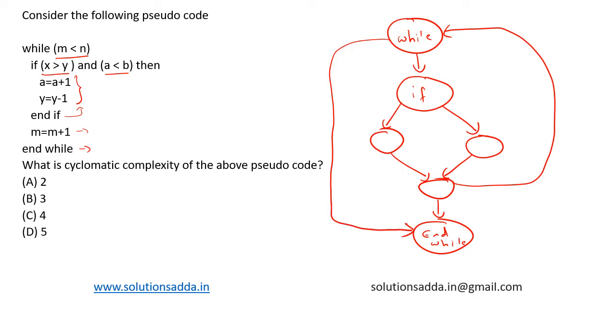Now, the cyclomatic complexity is calculated as number of edges minus number of nodes plus 2.